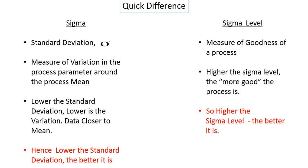As we saw in our previous videos, Sigma is nothing but standard deviation — it is the name given to this symbol, the small Greek letter Sigma. Standard deviation is the measure of variation in the process parameter around the process mean. It gives us an idea of how much the data is varying above and below the mean — it is a measure of the spread around the mean.